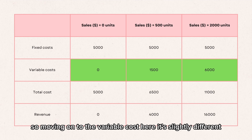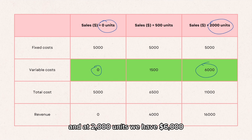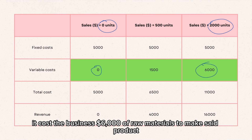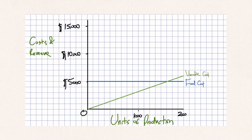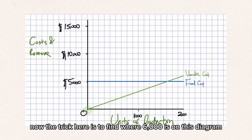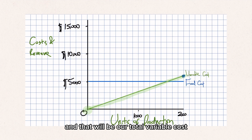Moving on to variable costs — at zero units we have zero variable costs, and at 2,000 units we have $6,000. So at 2,000 units it costs the business $6,000 in raw materials to make the product. The variable cost line starts at zero and we draw a line up to $6,000 at 2,000 units. That will be our total variable cost line.